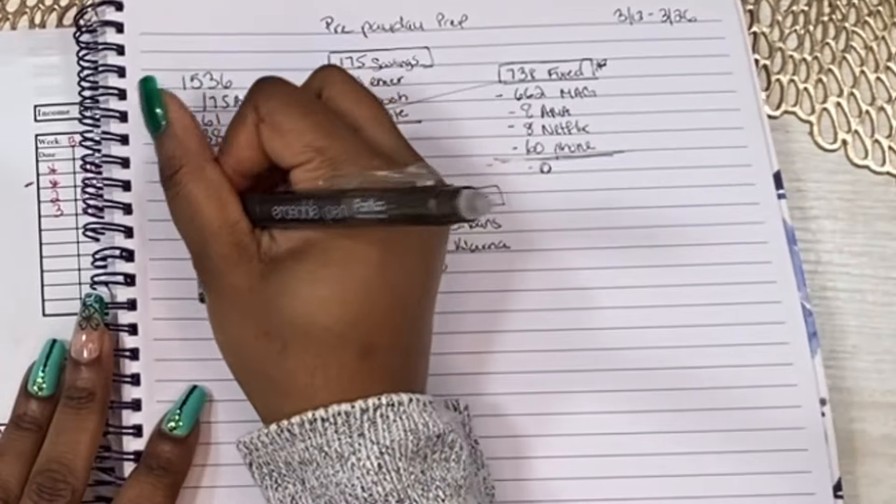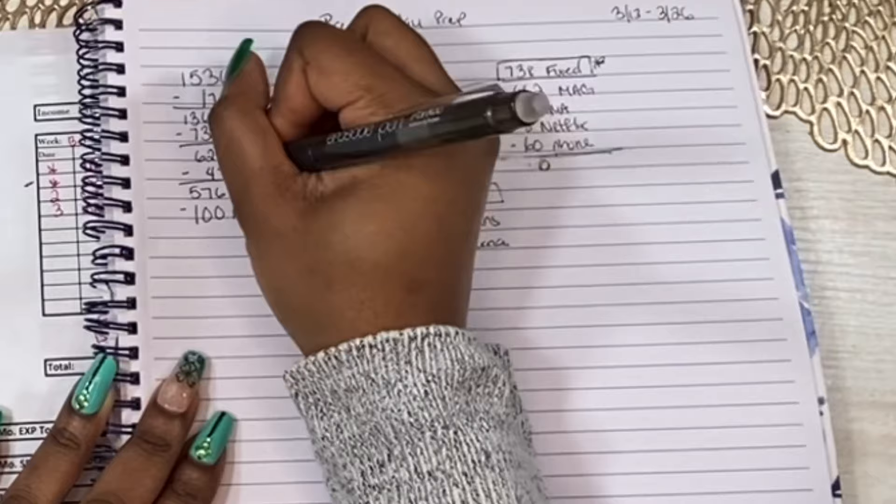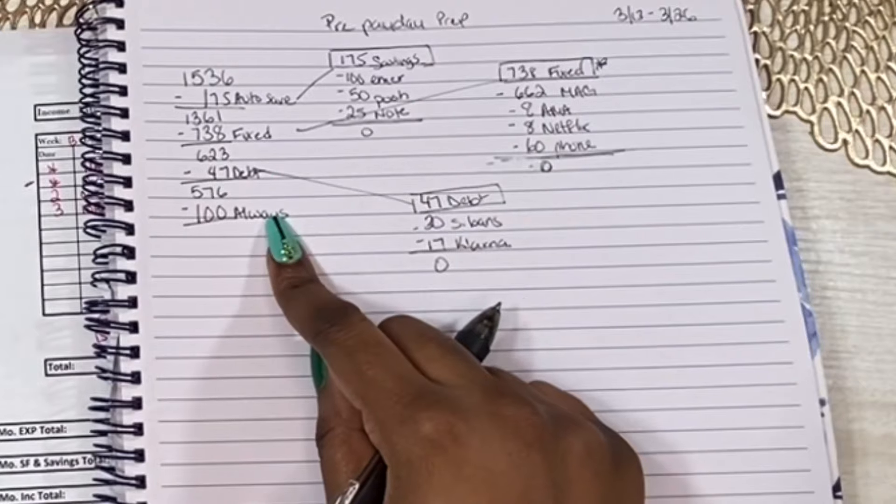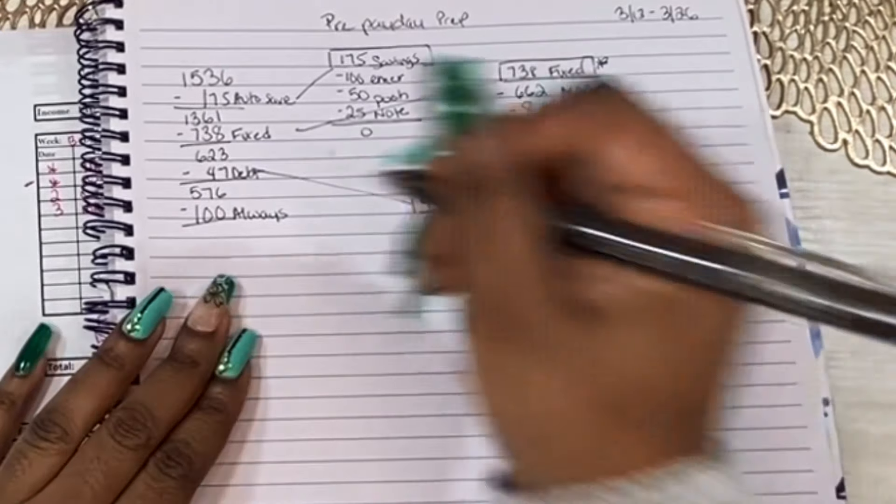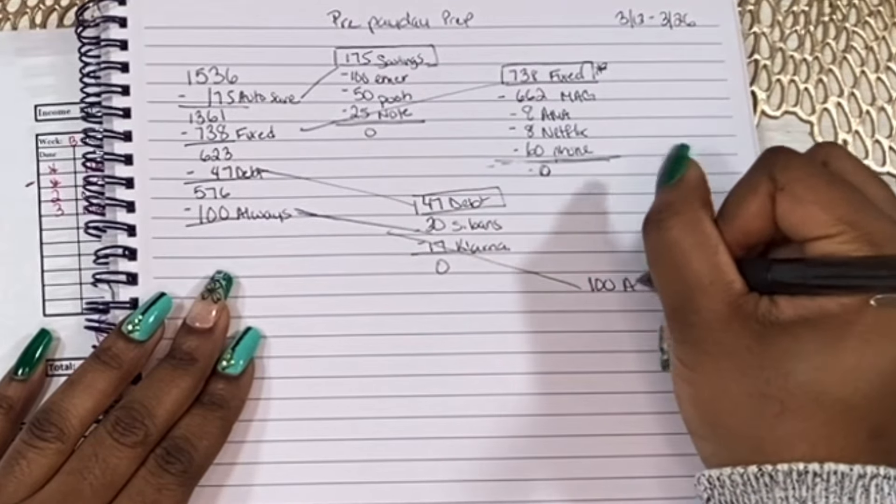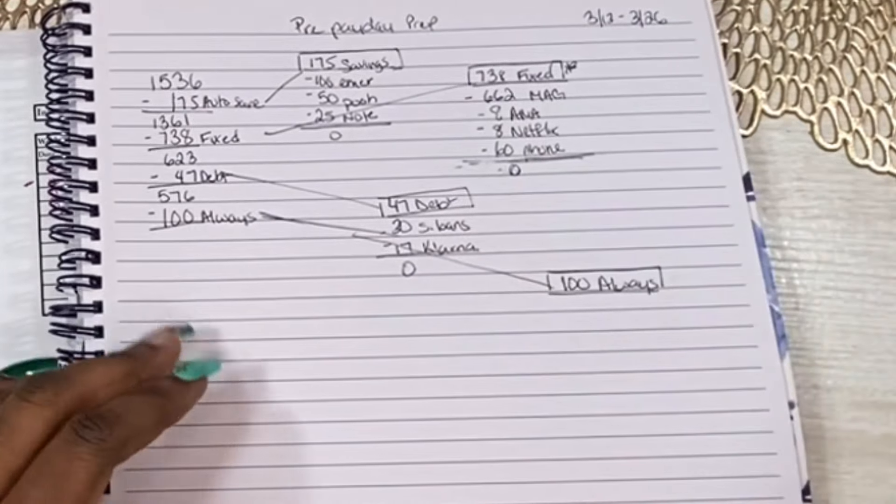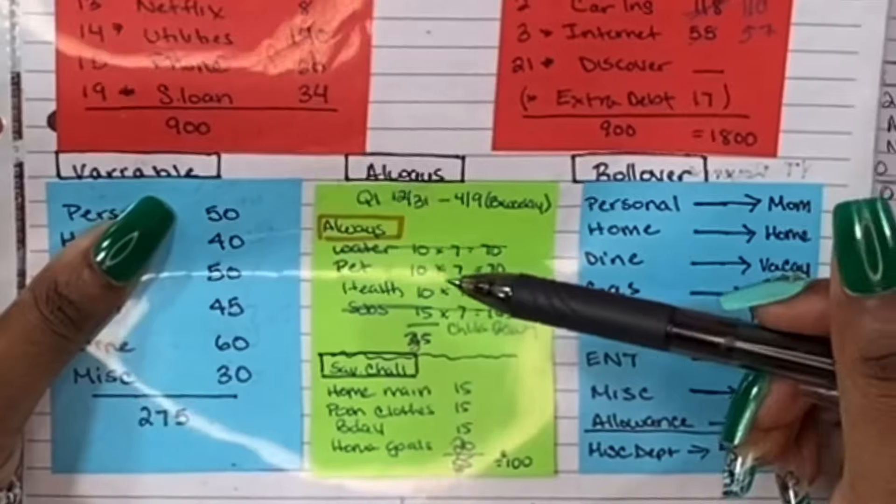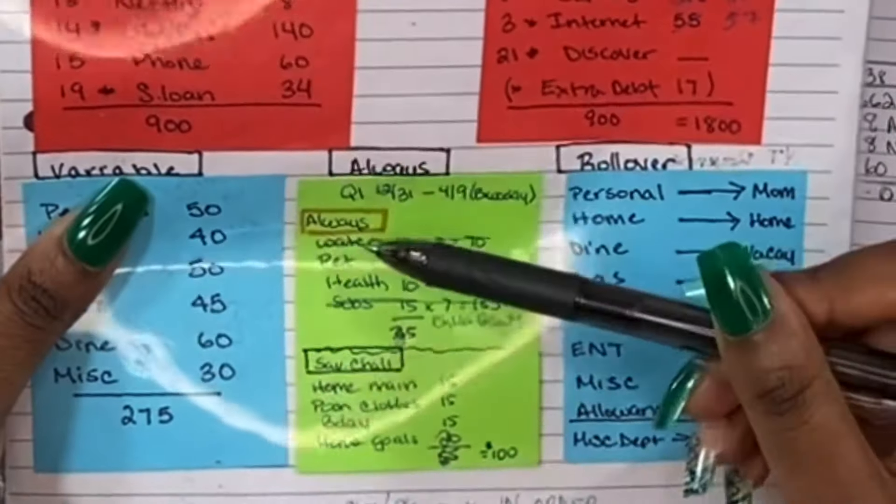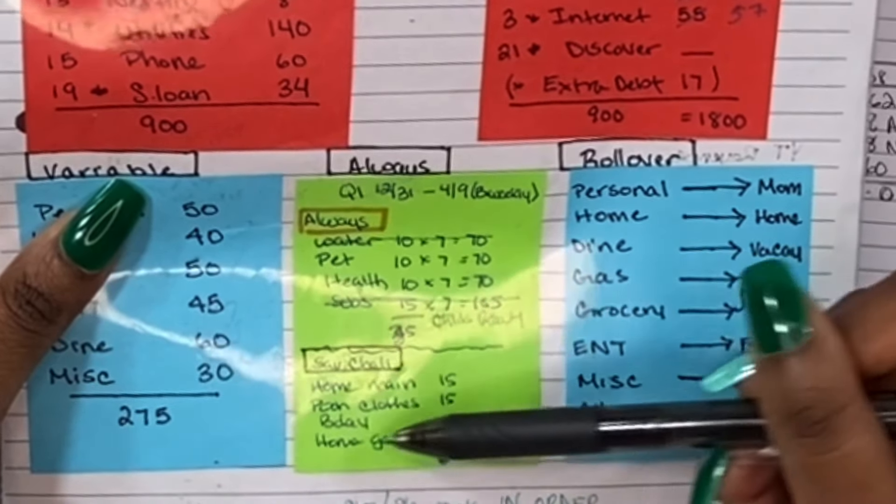The next thing that comes out is my always fund. So that is $100. And that comes out every pay period. I did move around some funds for the always fund. So $100 to the always fund. So usually what comes from the always fund are these eight things. Water, pet, health, subscriptions, home maintenance, my daughter's clothing savings challenge, birthday savings challenge, and the home gold savings challenge.